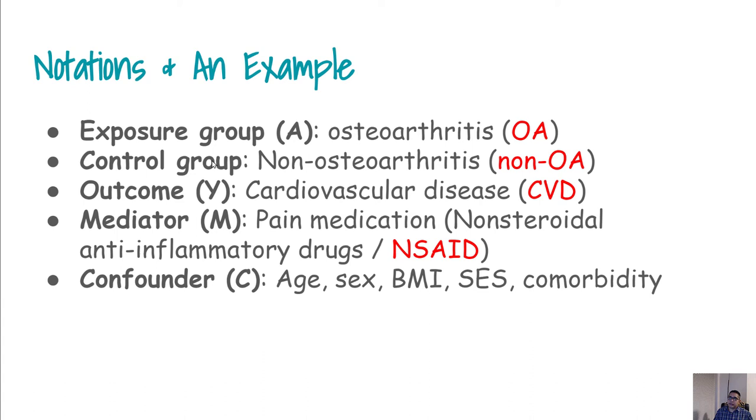The outcome is defined by Y. In our example, the outcome is cardiovascular disease or CVD. There has been a hypothesis in the arthritis literature that arthritis patients are supposed to take pain medications to relieve their pain, and especially for some of those painkillers, for example NSAIDs, they can increase the risk of cardiovascular disease. So that is the hypothesis here under which we are working with.